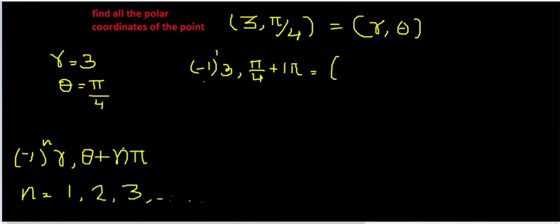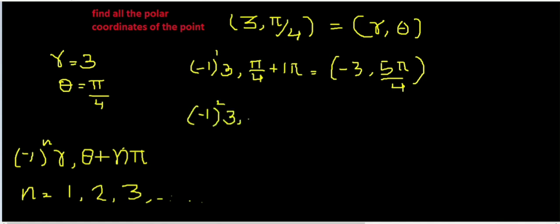That is equal to −3, and 5π/4 plus π gives 5π/4. Now, if we have n equal to 2, we have (−1)^2 into 3, and 5π/4 plus 2π, that is equal to 3 and 9π/4.